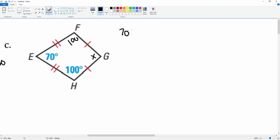We have 70 plus 100 plus 100 plus x equals 360. This is 270 after we combine like terms. 270 plus x equals 360. We subtract 270 from both sides, leaving you with x equals 90.